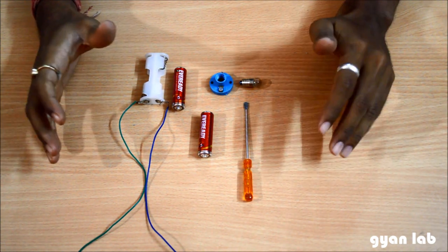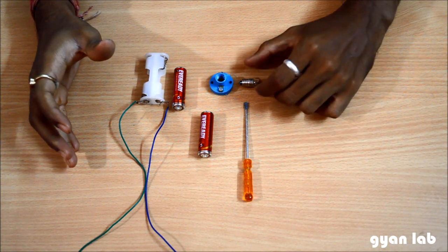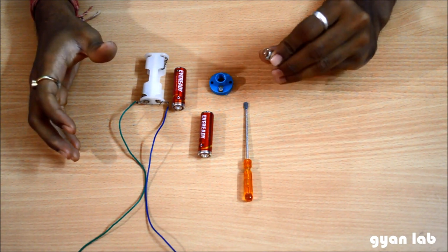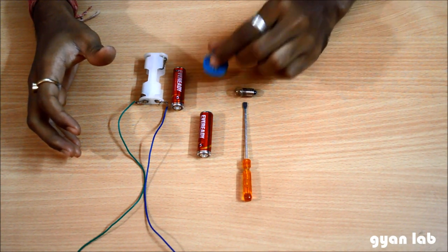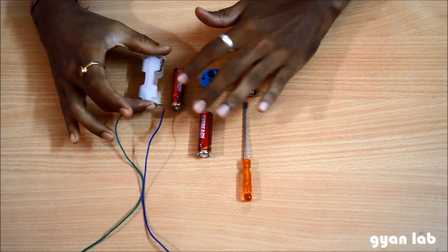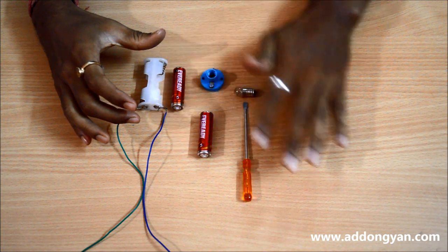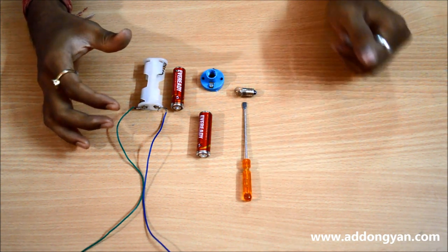For that we have a few components. I have a small bulb which you would have probably seen in a torch. I have a bulb holder. I have a battery holder and two batteries to go into it. And I have a screwdriver. So let's begin with the activity.